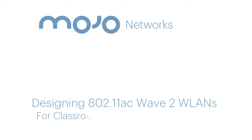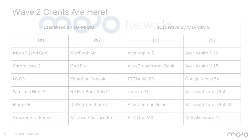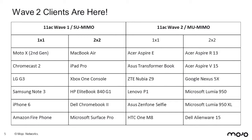I was surprised doing some research trying to find out what type of clients are available. We can't go to a Wave 2 solution if we only have Wave 2 APs. Obviously, we need Wave 2 clients. You could use Wave 1 clients with Wave 2 APs, but you wouldn't get nearly the benefits if you were to do that. On the right-hand side, you see a bunch of Wave 2 clients.